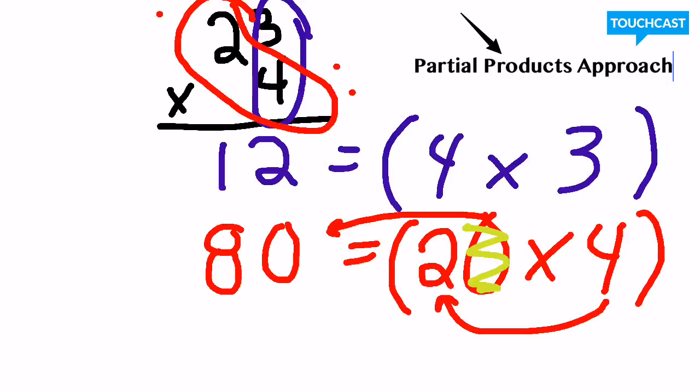Now I have my two partial sums. I can't multiply any more, so now I need to add these two up to find my final product.